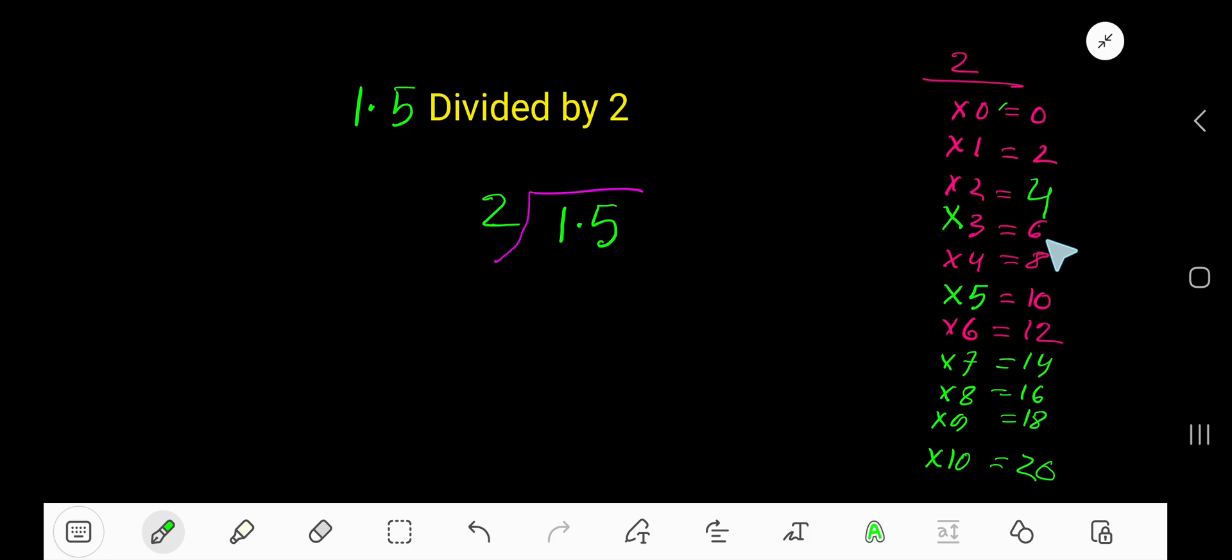2 plus 2 is 4, 4 plus 2 is 6, 6 plus 2 is 8, 8 plus 2 is 10. Now, 2 goes into 1 how many times? 0 times, because 1 is less than 2. So 0 times 2 is 0, subtract, bring down.